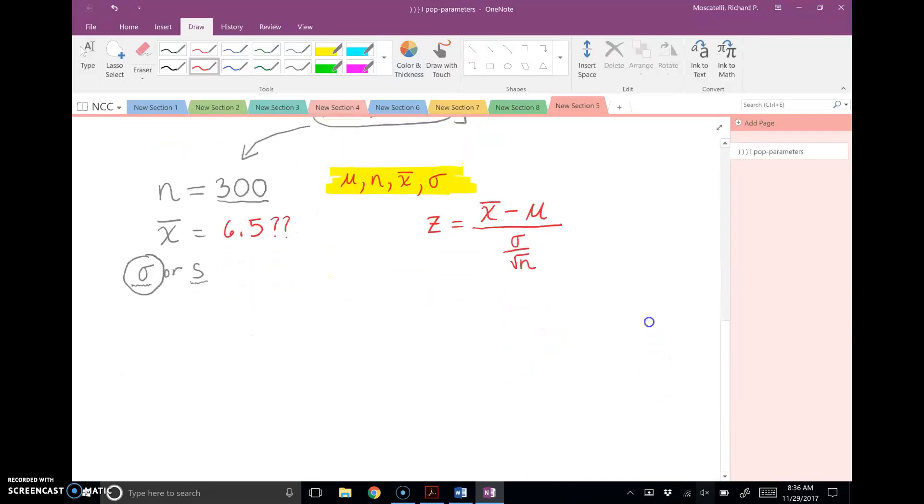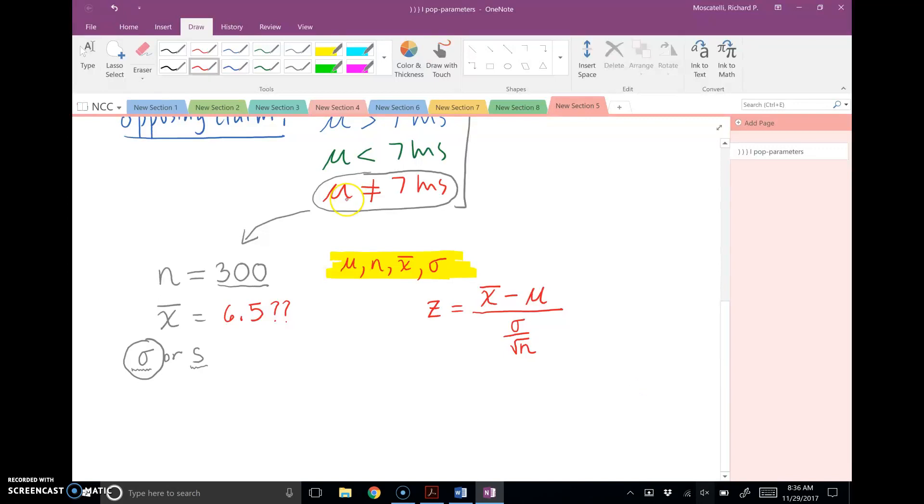Now, so again, what relates the population mean and n x-bar and sigma? Well, that's things called the z-score formula.